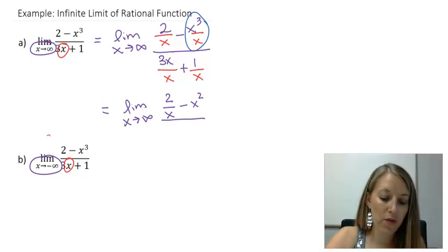Over 3x over x, those x's cancel out, leaving me with just 3. And then plus 1 over x I cannot do anything with.